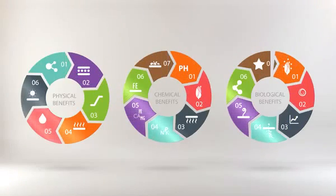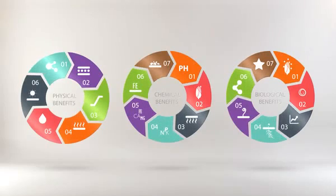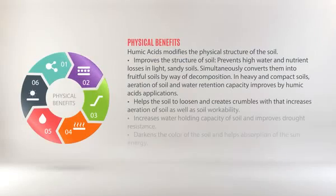The benefits of humic and fulvic acids can be grouped into five main headings: Physical, Chemical, Biological, Ecological and Economic.